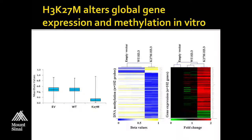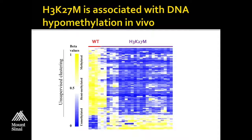If we look at human tumors, we see the same pattern. Here are human tumors with K27M and those with wild type. You can see, again, that there's global hypomethylation in tumors that have this lysine 27M mutation.